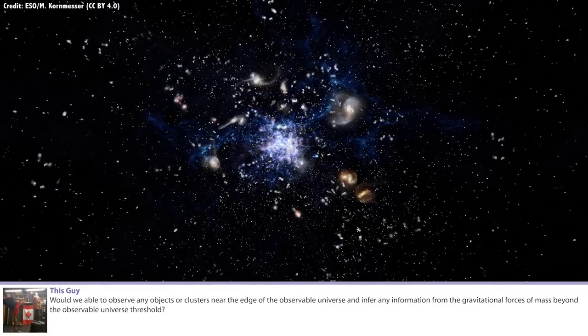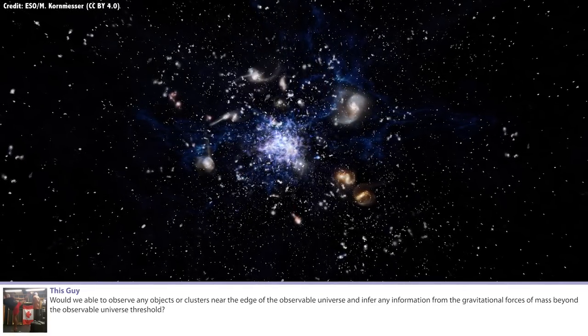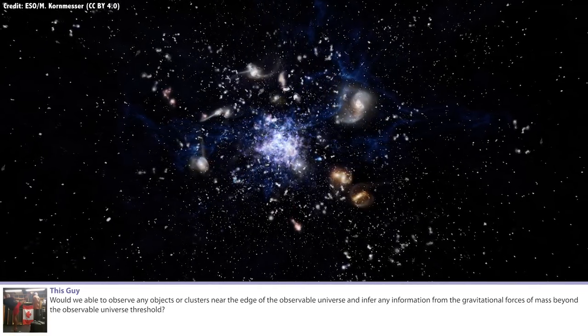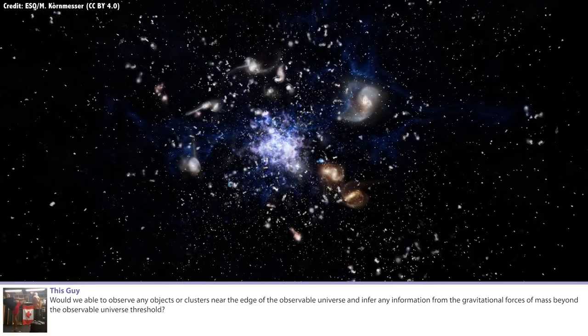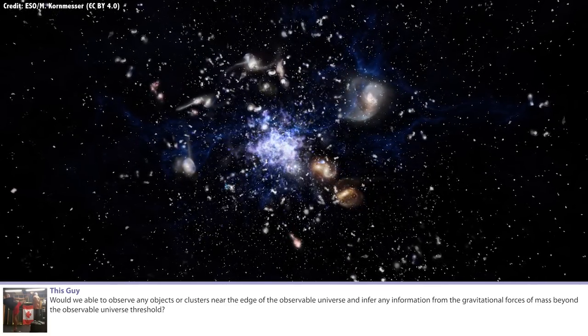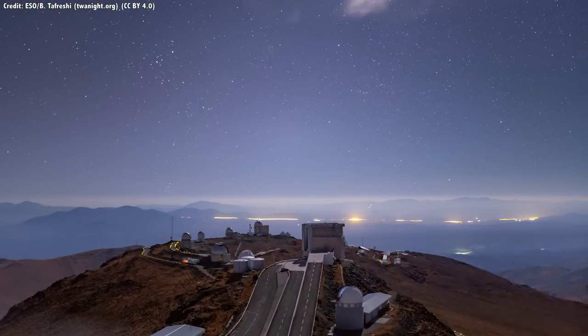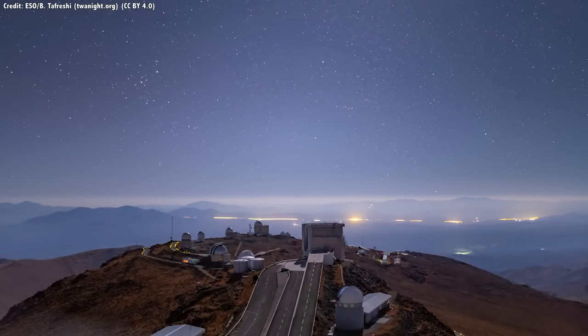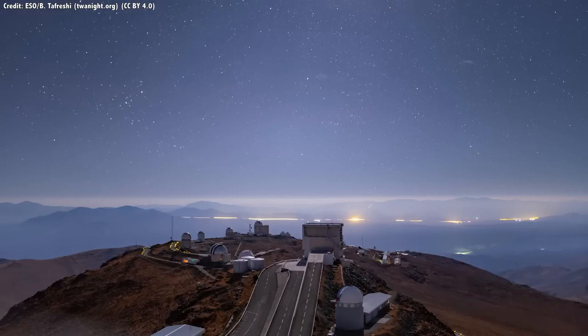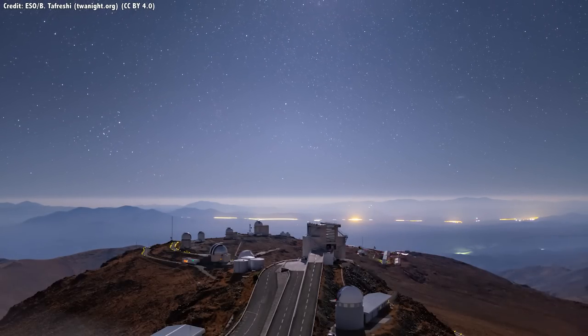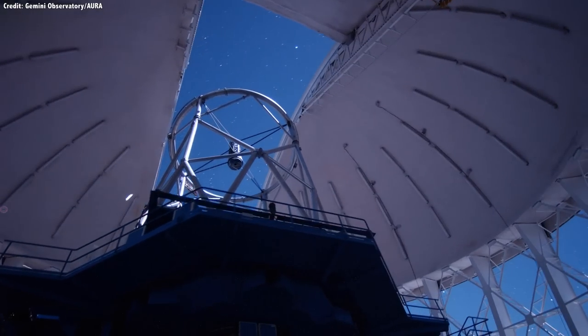This guy, would we be able to observe any objects or clusters near the edge of the observable universe and infer any information from the gravitational force of mass beyond the observable universe threshold? So the question you're asking is a misunderstanding of what it is when we look out to the edge of the observable universe. If light moved instantaneously, if you could look out in any direction and as far as you could see you were seeing stuff that the light was traveling instantaneously, then you'd be seeing the universe as it is today, no matter where you look.